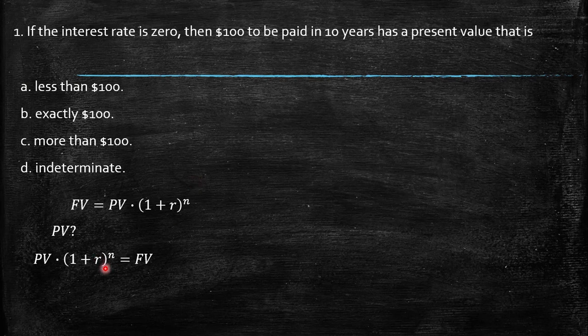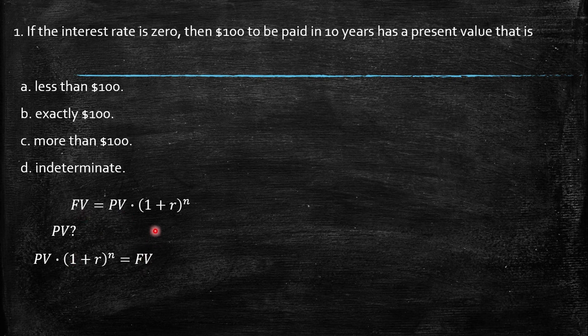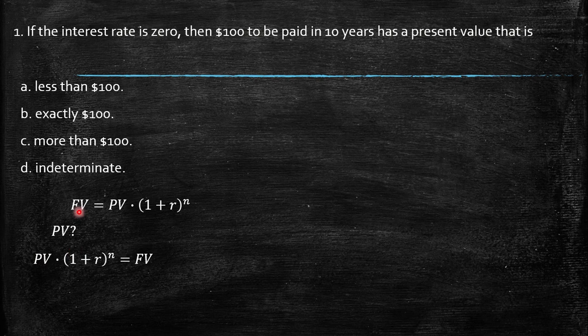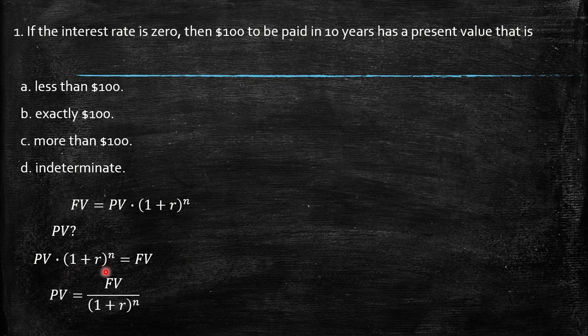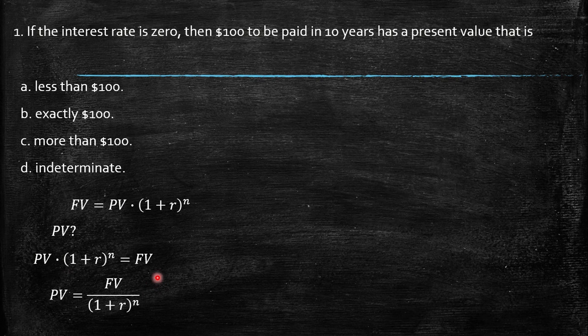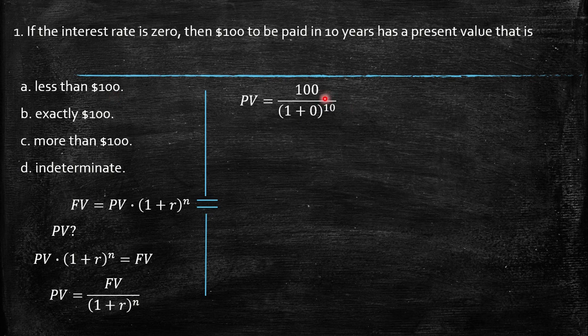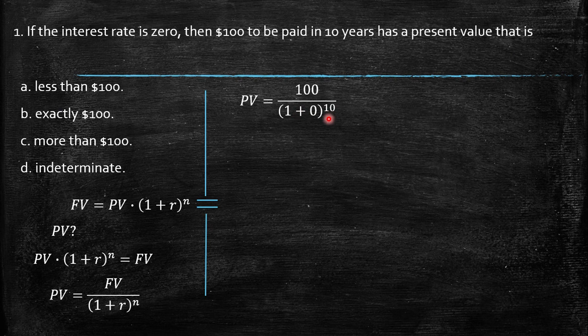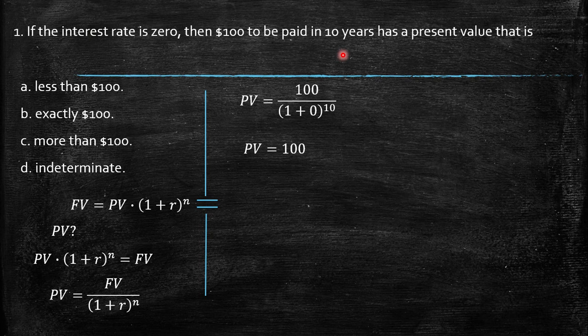We're going to solve for that term. If A equals B, then B equals A - I just reorder. This expression (1 + r)^n is multiplying, so it goes to the other side dividing. So PV = FV / (1 + r)^n. Then we replace the values: the final value is $100, (1 + 0)^10. So we have $100. The answer is B, exactly $100.